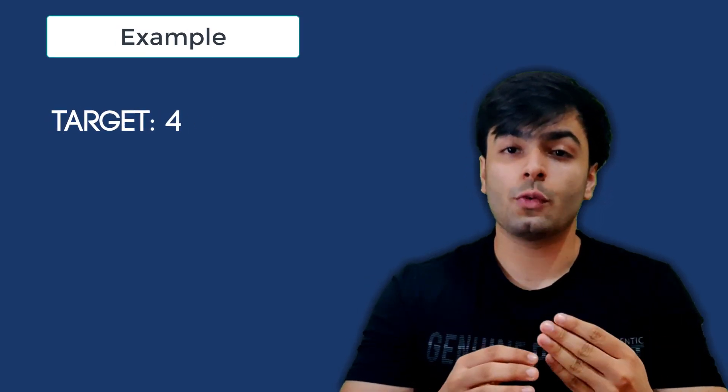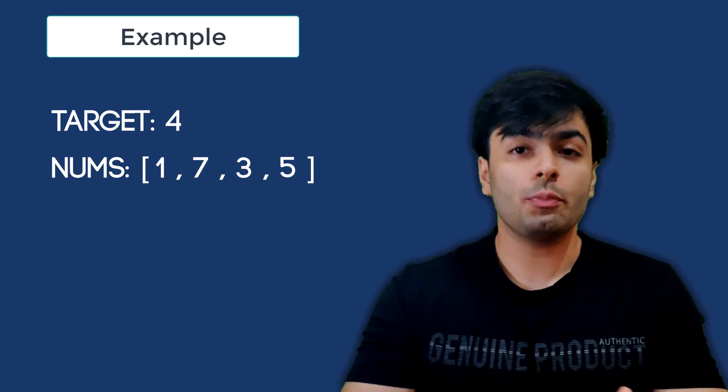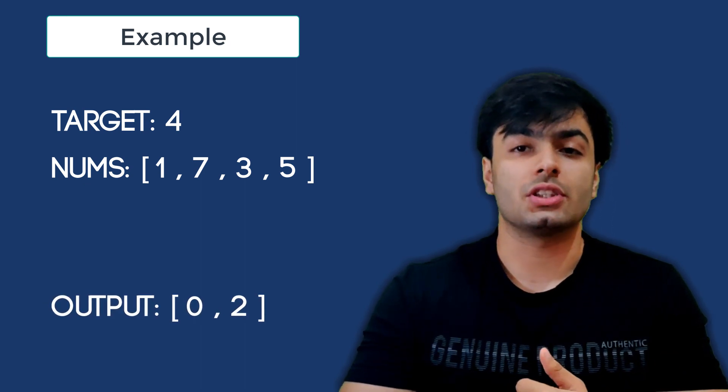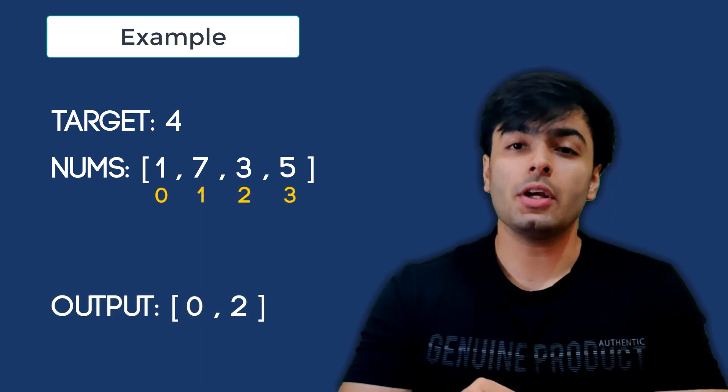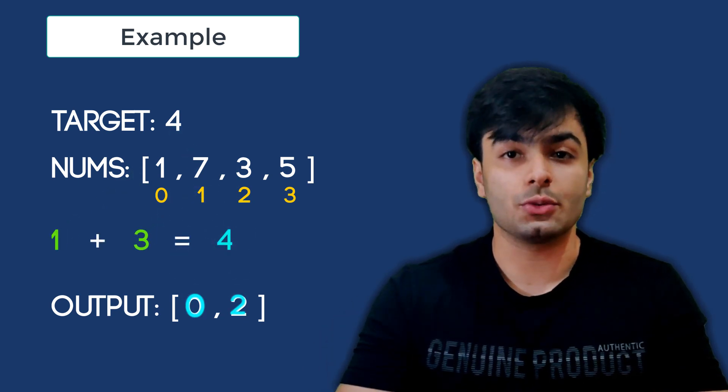As an example, if the target was 4 and the list contained the numbers 1, 7, 3, and 5, then our output would be a list containing the numbers 0 and 2. This is because from our input list, 1 and 3 add up to 4 and the index numbers of 1 and 3 are 0 and 2.